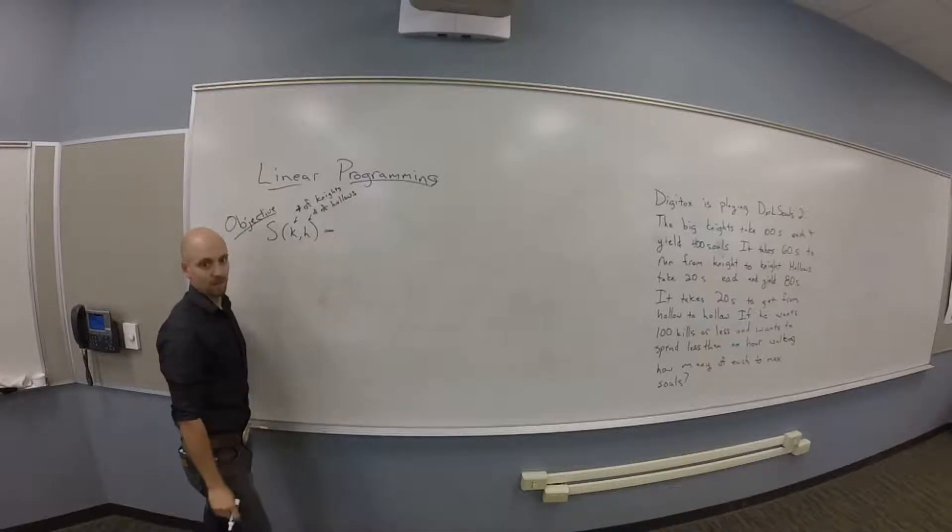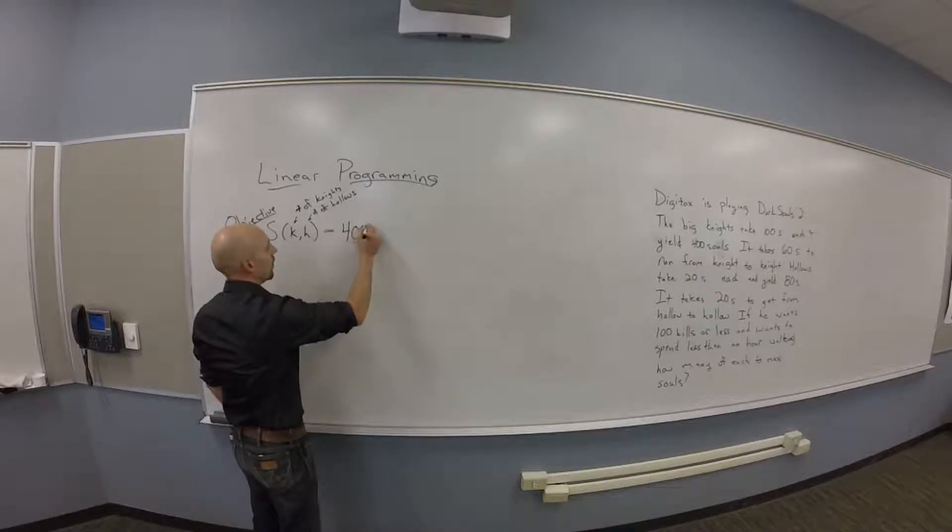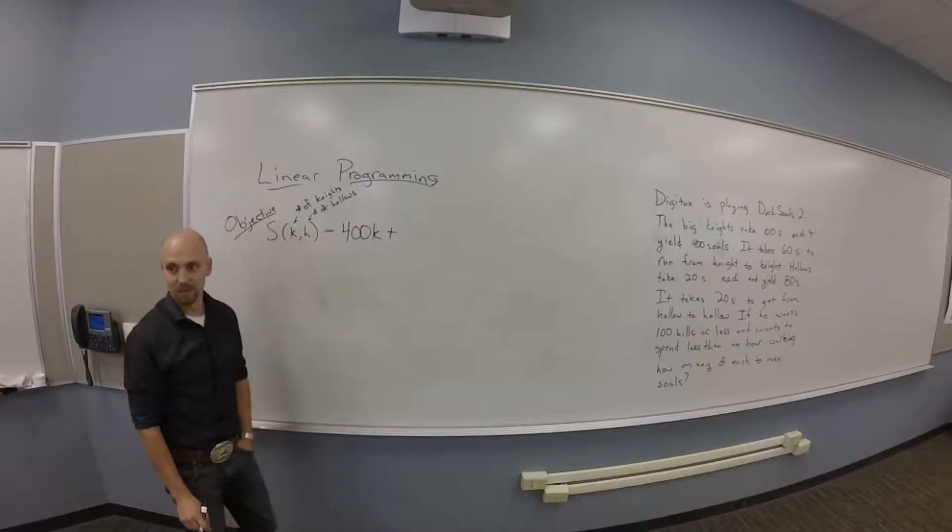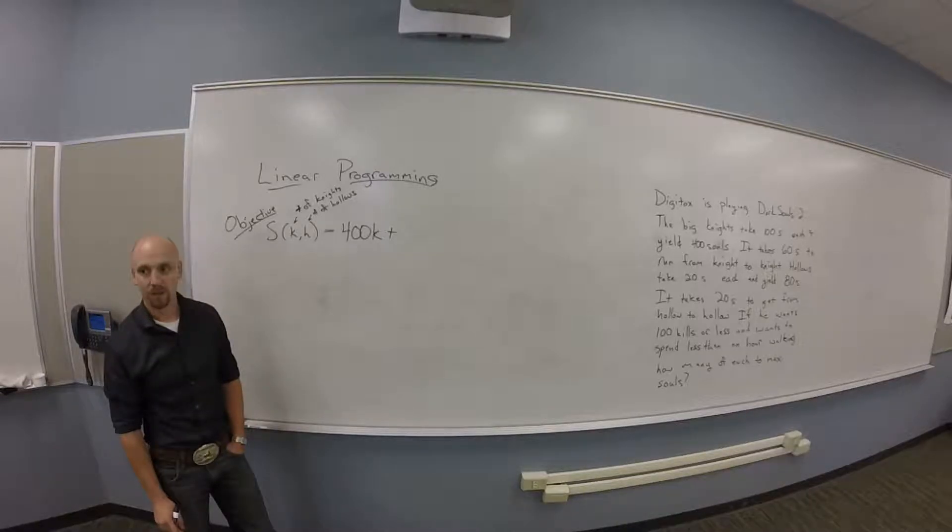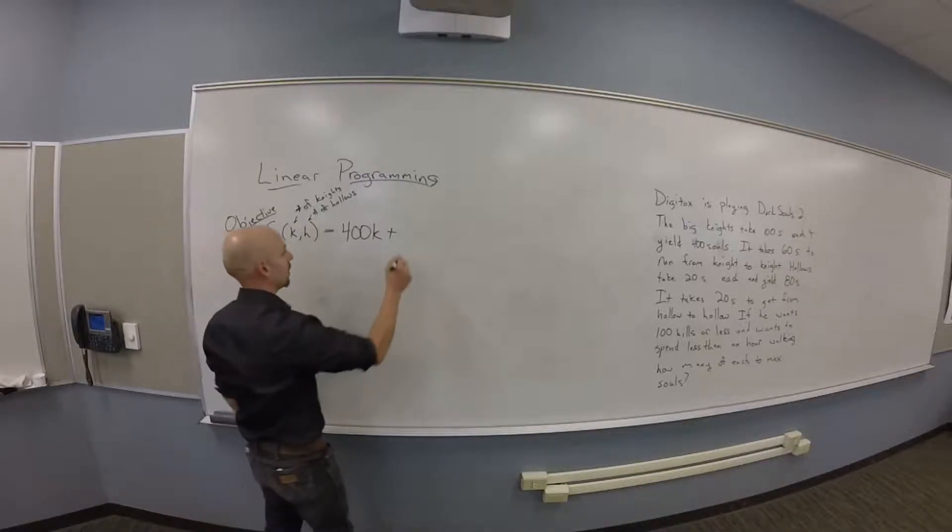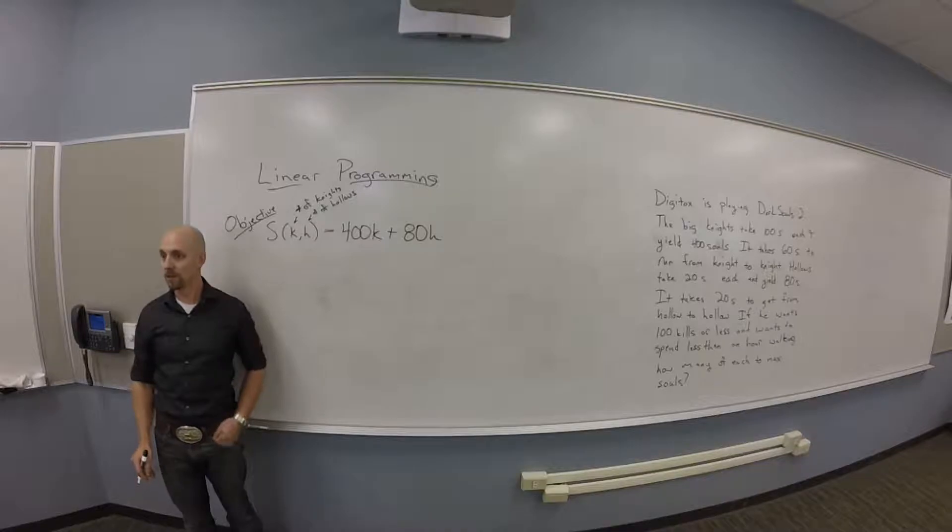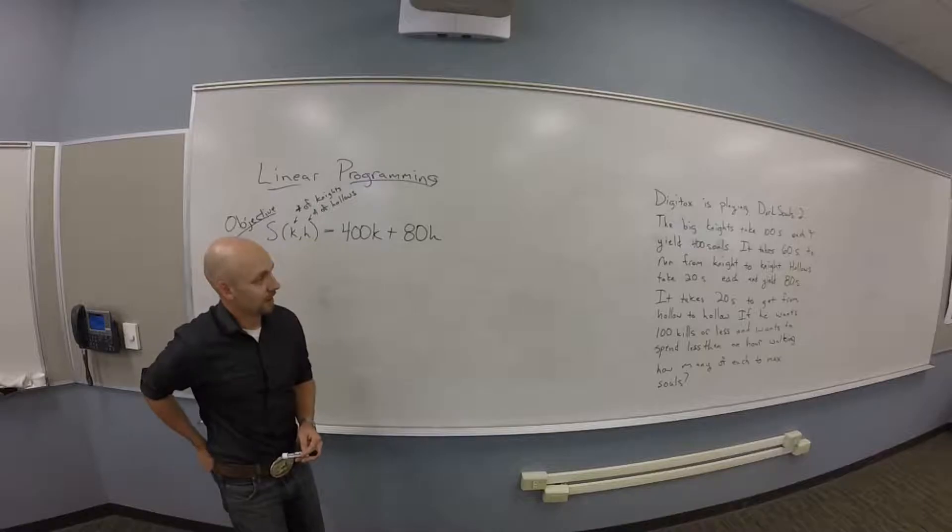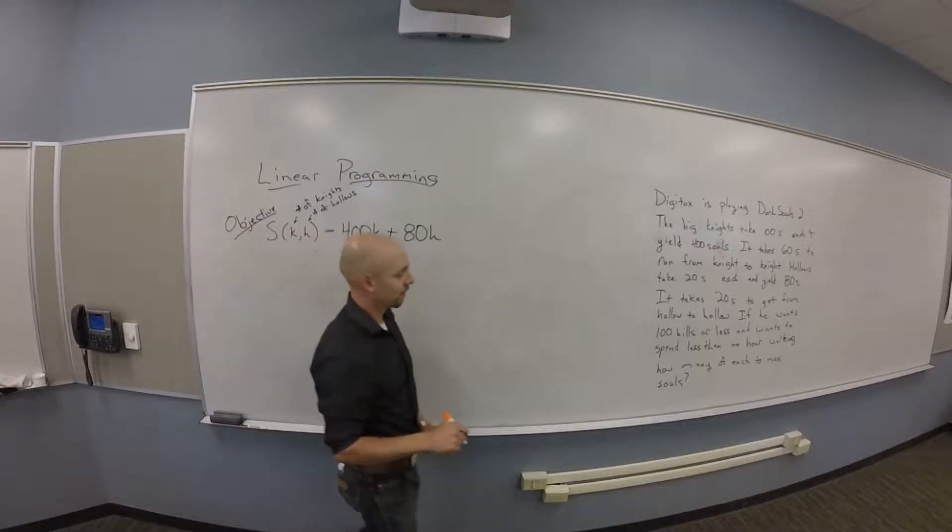How many souls do I get from each knight? 400. So I make 400 times K souls from knights. How many souls do you make from hollows? 80. So there's your objective function. That's the thing I want to maximize. Now I need to find the constraints here. Do you see a constraint in here?